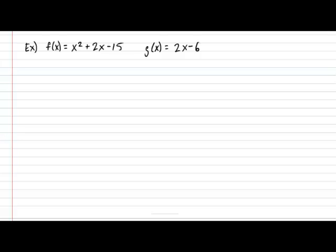For the first question, I would like you to add these two functions. So give me the final rule for f plus g of x. Go ahead, pause the video, and try it on your own. All right, let's see how you guys did. So f plus g of x. That means that x squared plus 2x minus 15 gets added to 2x minus 6. The final result gives us x squared plus 4x minus 21. Pretty easy.